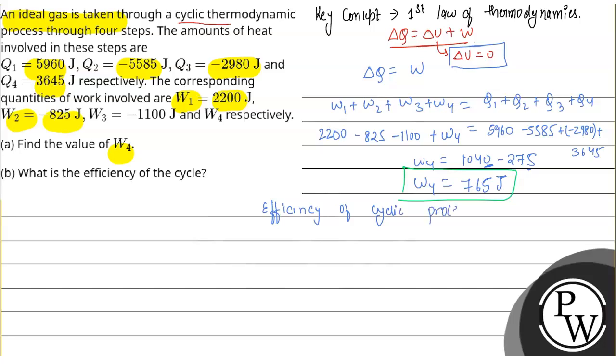In formula it can be written as eta is equal to net work done divided by total heat supplied.